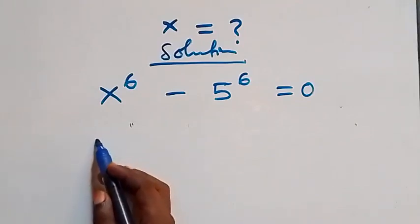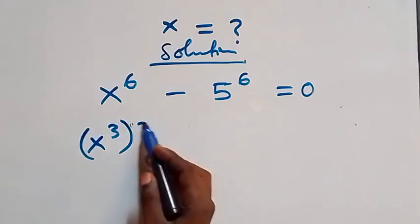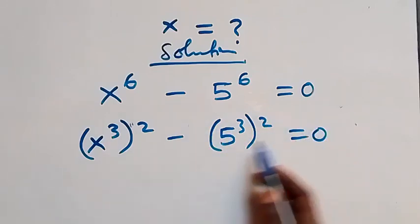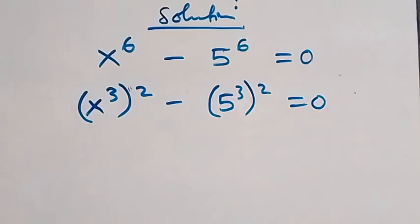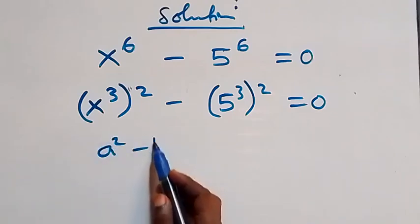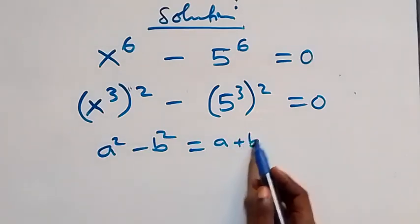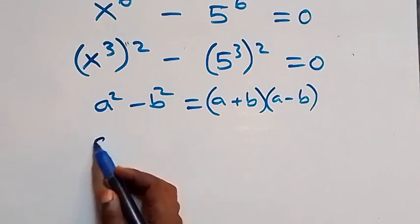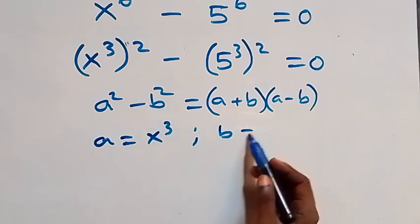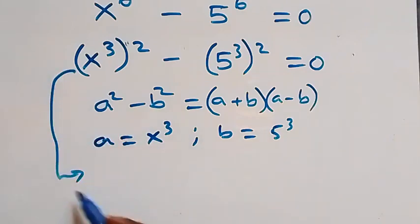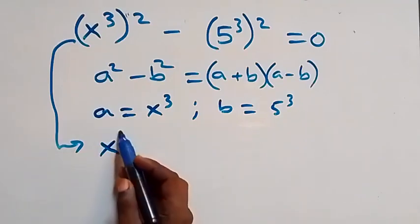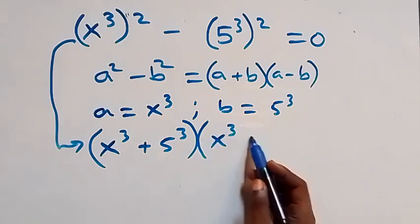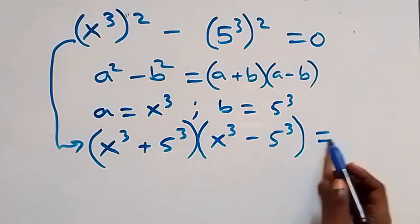We express this as x raised to power 3, raised to power 2, minus 5 raised to power 3, raised to power 2, equals to zero — since 2 times 3 is 6. This follows the pattern a squared minus b squared, which equals a plus b into brackets times a minus b. Here a is x raised to power 3 and b is 5 raised to power 3, giving us x³ plus 5³ times x³ minus 5³ equals zero.